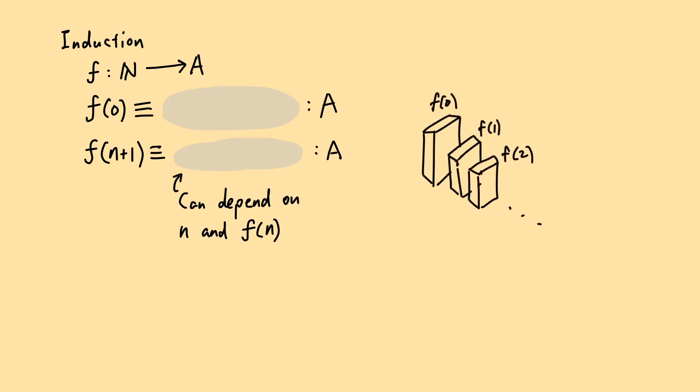Induction tells us how to define a function from the natural number type N to a type A. It says that we just need to define f(0), and then for each n, define f(n+1), as something that may depend on f(n). The idea is that the second rule gives us the definition of f(1) using f(0), and then the definition of f(2) using f(1), and then f(3), and so on, like a row of dominoes. We will write triple lines to denote equality by definition, to distinguish it from the identity type.